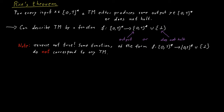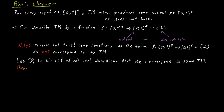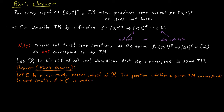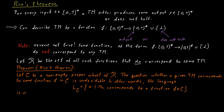We are interested in the set of functions that do correspond to Turing machines, and we call this set R. So R is the set of all functions that do correspond to a Turing machine. We are now ready to state Rice's Theorem. It says: if C is a non-empty proper subset of R, then the question of whether a given Turing machine corresponds to some function F in the subset C is undecidable. In other words, the language L_C — consisting of all α such that M_α corresponds to some function F in C — is undecidable.